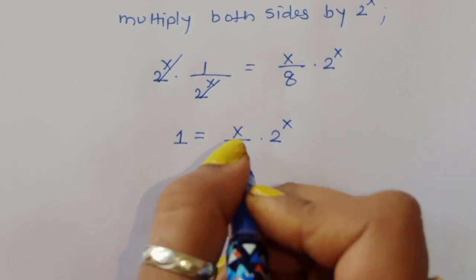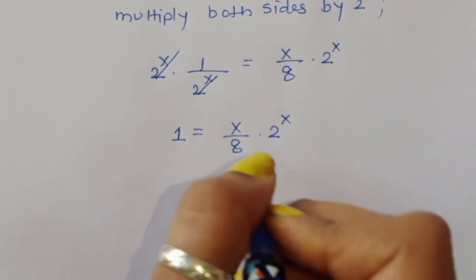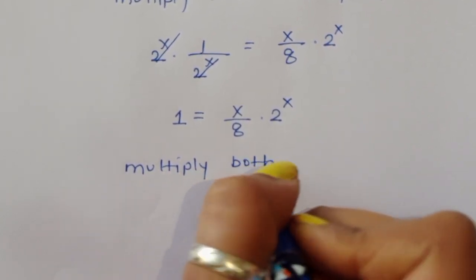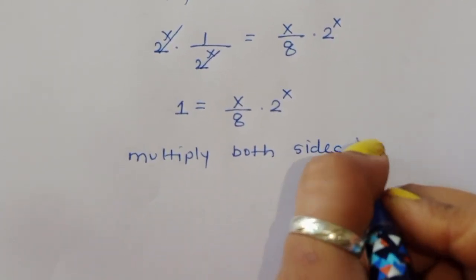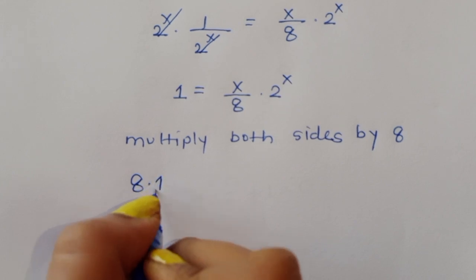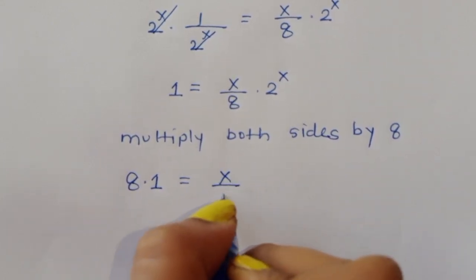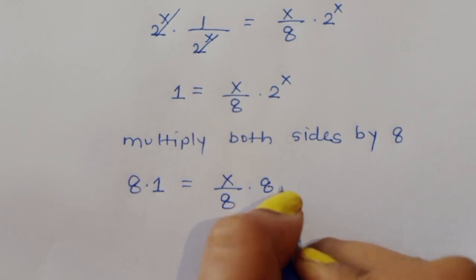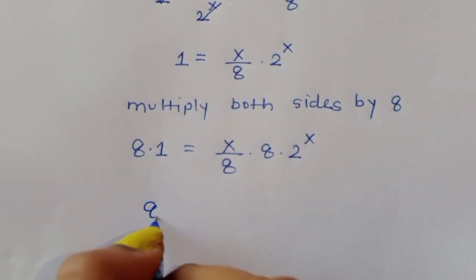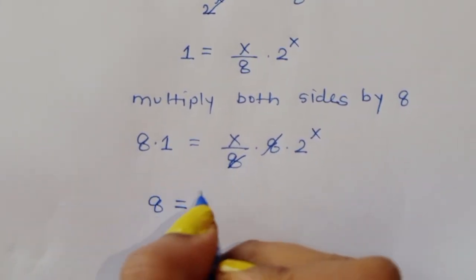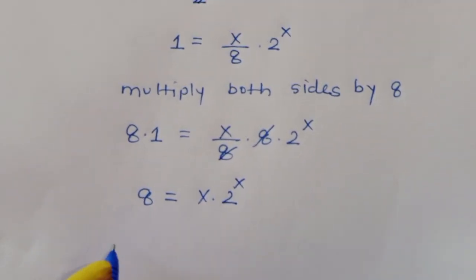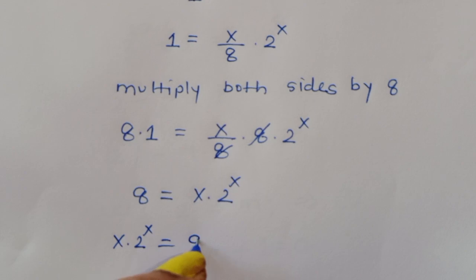Now we have to remove this 8, so we multiply both sides by 8. Then 8 times 1 equals x upon 8 times 8 times 2 power x. The 8 cancels, so we get x times 2 power x is equal to 8.